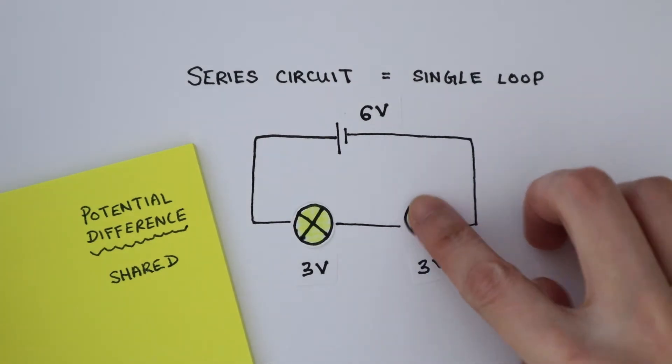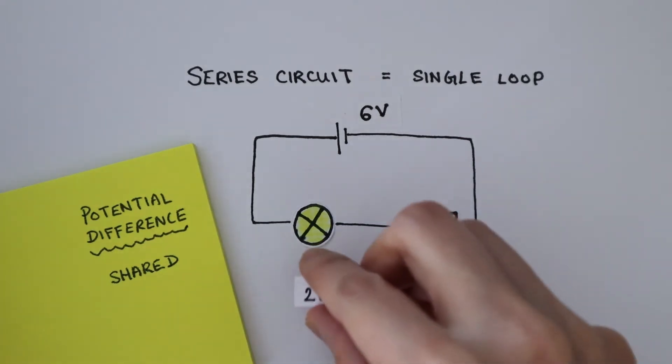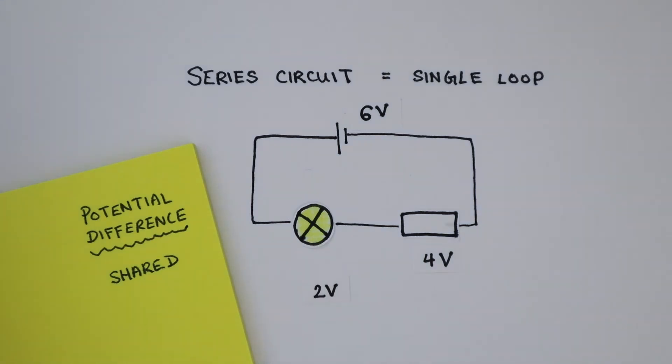But if we swap this bulb out for another component, let's say a resistor that has 4 volts across it, then the bulb will have 2 volts. They always add up to the potential difference of the cell.